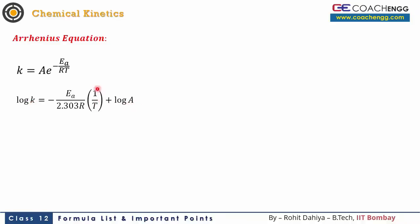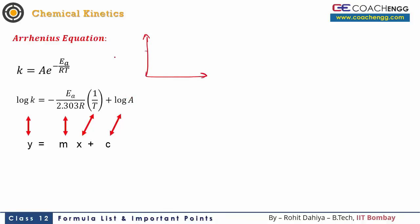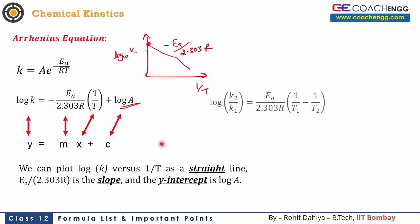Looking at the variation of k with 1/T: treating 1/T as the variable, the equation log k = −Ea/(2.303R) × (1/T) + log A is in the form Y = MX + C. So a graph of log₁₀(k) vs. 1/T gives a straight line with slope = −Ea/(2.303R) and Y-intercept = log A.